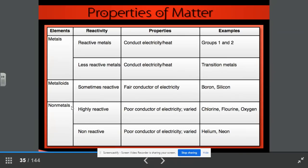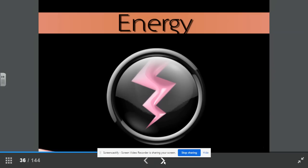Nonmetals are highly reactive. We have highly reactive ones and nonreactive ones. The highly reactive ones are poor conductors of electricity. They would include examples, chlorine, fluorine, and oxygen. The nonreactive nonmetals are poor conductors of electricity as well. And those would be helium and neon.